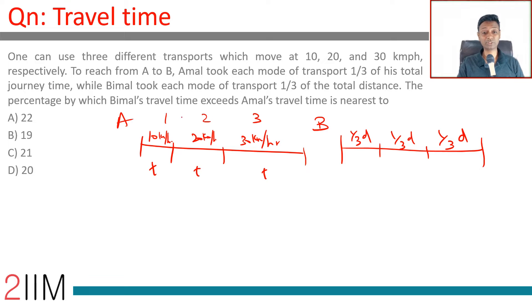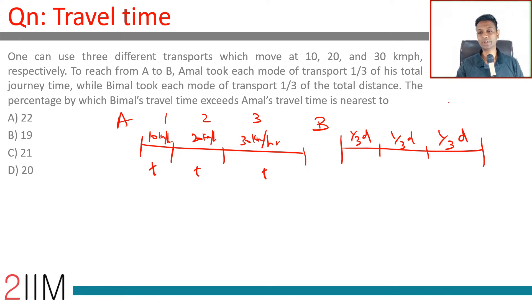To make life simple, the total distance should be a multiple of both 6 and 3. So let's assume the total distance is 60 kilometers.